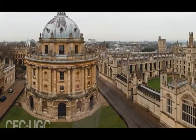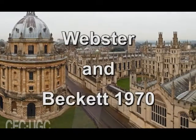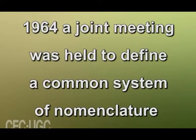The development of this work has been summarized in a paper by Webster and Beckett in 1970. Similar studies had been made in South Africa and Australia, and in 1964 a joint meeting was held to define a common system of nomenclature. This system recognizes several categories of terrain, each defined by a combination of climate, geology, and land form. The units are in decreasing order of size: